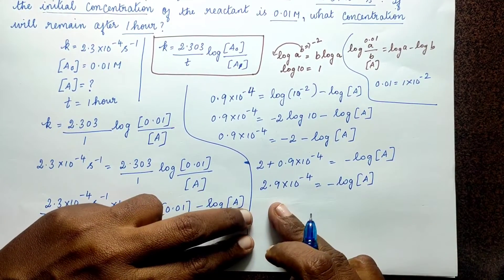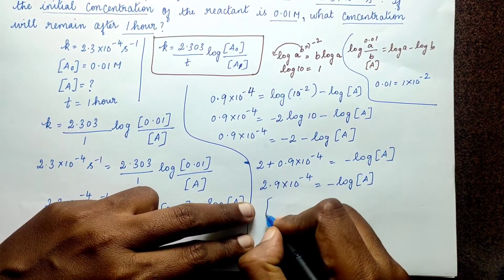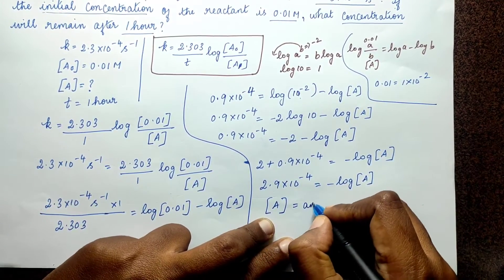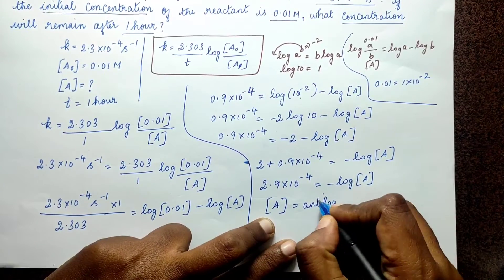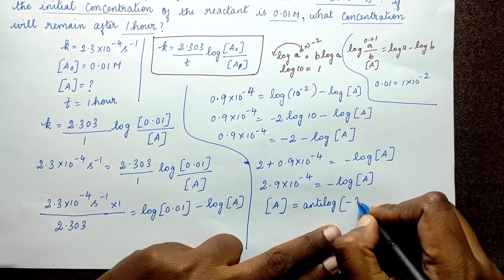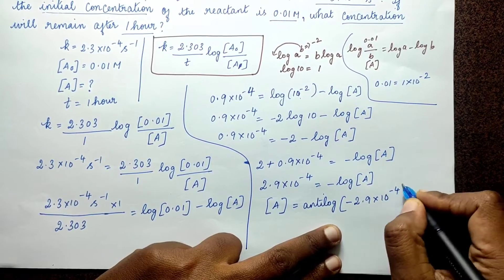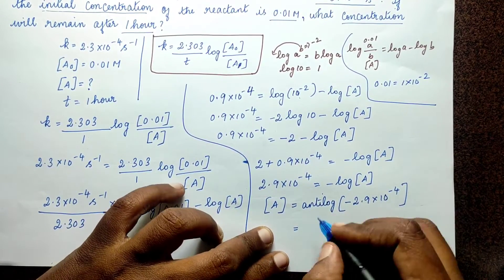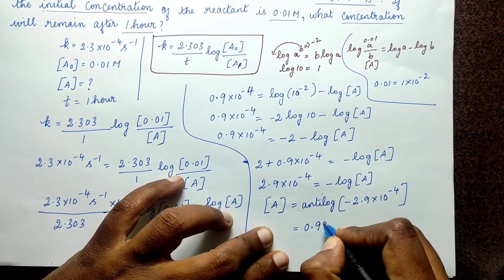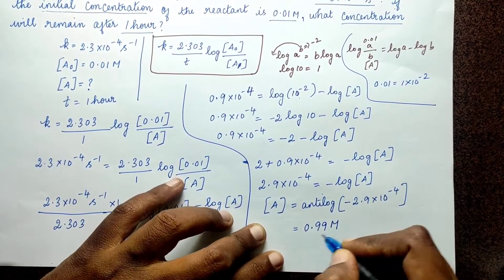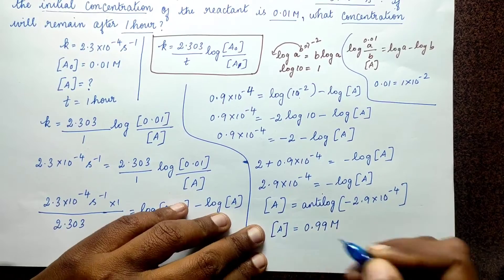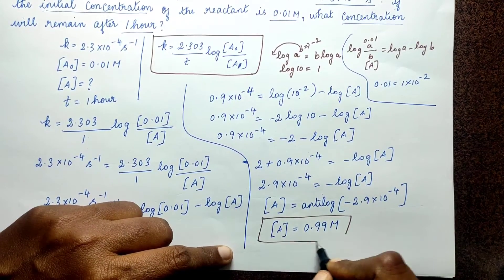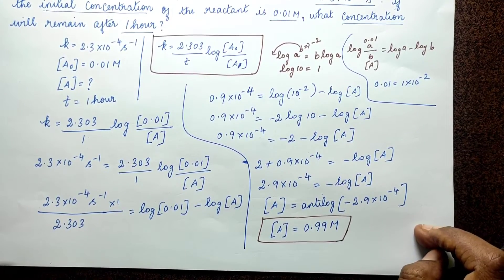To find [A], we take the anti-log. Therefore, concentration of A = anti-log(−2.9 × 10⁻⁴) ≈ 0.99 M. So the concentration of A after one hour is 0.99 M.